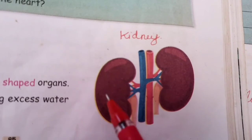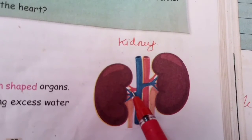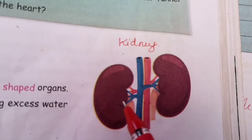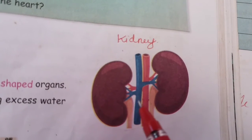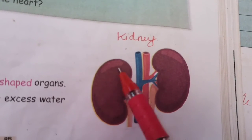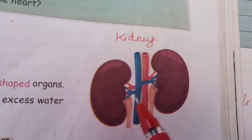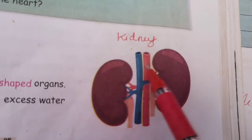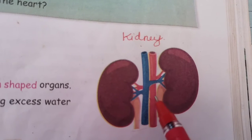Now look at this picture. This is a picture of kidney. The kidney is also one of the internal organs because it is located inside of our body. It is located in the abdomen region, meaning the back side of the hip area.